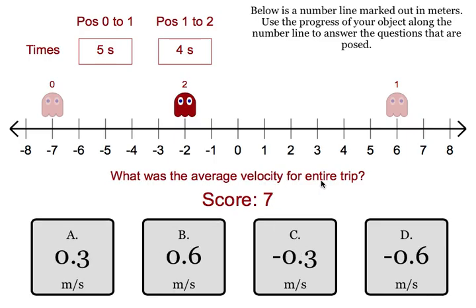Average velocity for the entire trip. With velocity average, we're just looking at his displacement, which went from negative 7 to negative 2, so that's a displacement of positive 5, in 9 seconds. So that is right around 0.6 meters per second to the right, so that's positive.